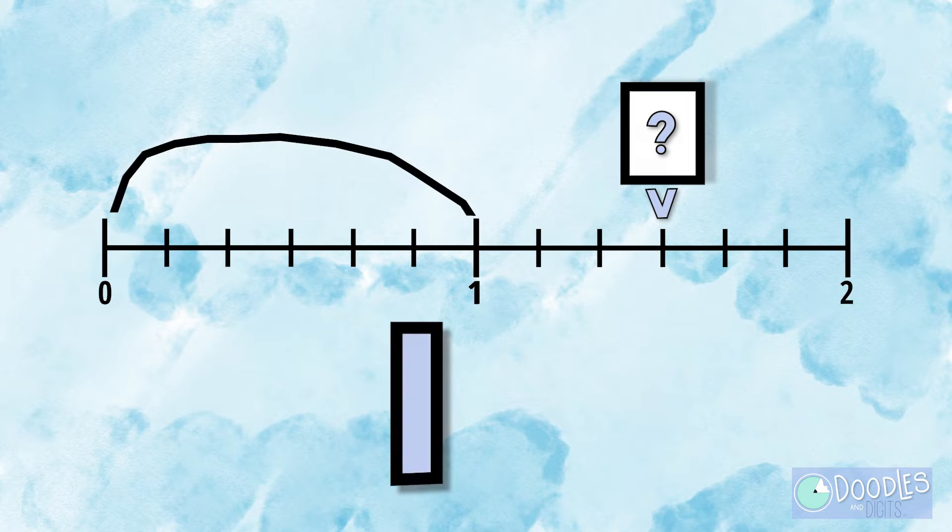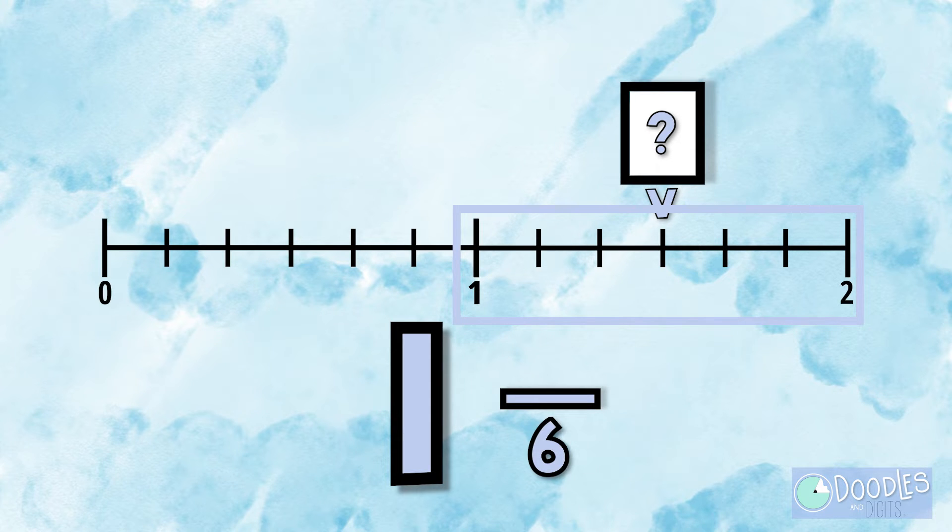Alright, let's try a few more together. Alright, what mixed number is this number line showing? Let's first do our whole number jump. So we have jumped one whole number. Now let's try to figure out what fraction this number line is showing. It's broken down into sixths so we're going to put six on the denominator. How many sixths do we jump? We jump three sixths. So our mixed number is one and three sixths.